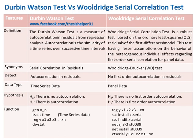The Durbin-Watson test is also called Serial Correlation in Residuals, whereas the Wooldridge Serial Correlation test is also called the Wooldridge-Drucker, or WD, test.